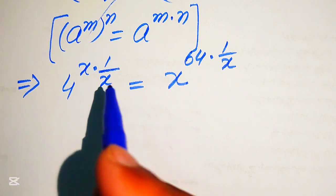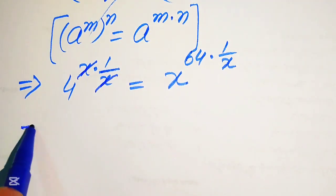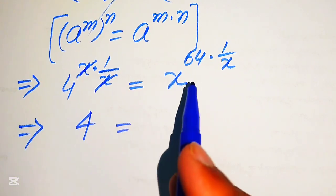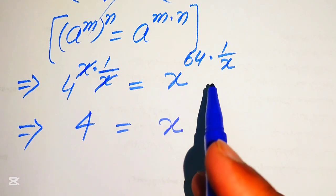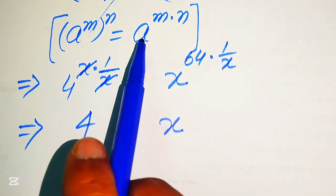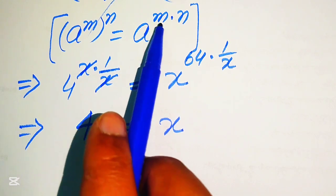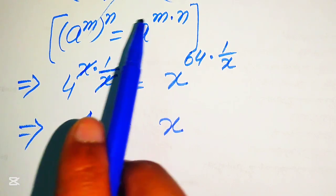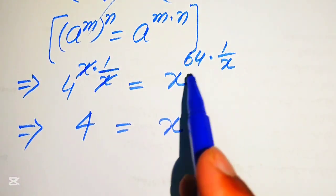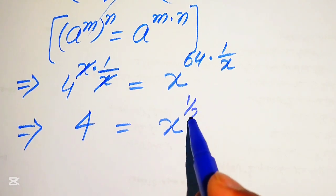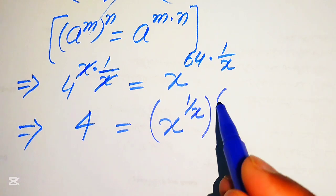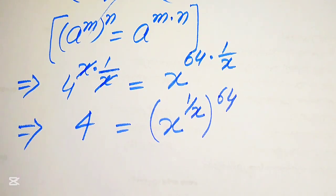Here, x and x cancel out by each other. On the right hand side, we move 1 over x inside the term, written as x to the power of 1 over x, and its whole power is 64. So we get 4 equals to x to the power of 1 over x, whole power 64.